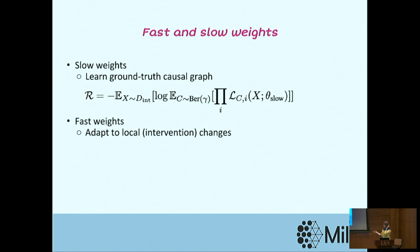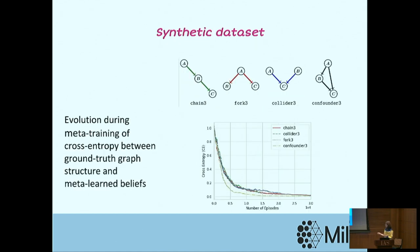Now we have learned the causal model, but how do we deal with interventions and adaptation? We disentangle the parameters into slow weights and fast weights. Slow weights are the weights for the ground truth causal model. Once an intervention is performed, fast weights within an episode model the intervention. With both slow weights and fast weights, we can model essentially any interventions given a causal graph.